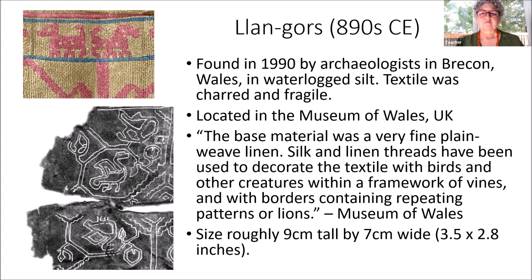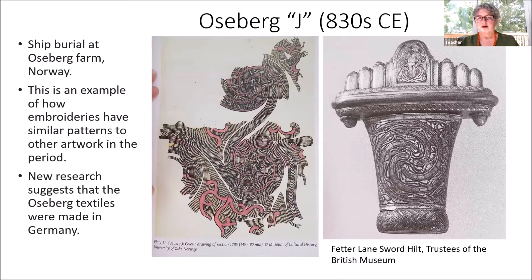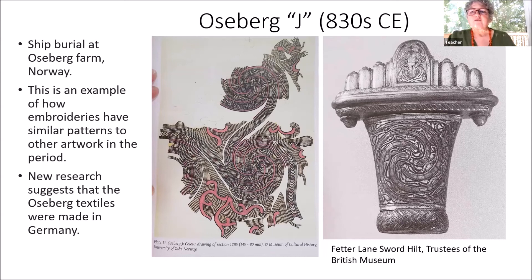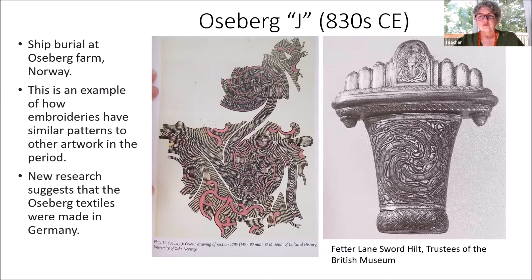The Osberg burial — this is from Norway. This is an example of how embroideries have similar patterns to other artwork in period. We have the drawing of Osberg J on the left, and then the Federline sword hilt on the right, and you can see the pattern is very, very similar. So if you're going to argue about using sword hilts as inspiration for your embroidery, this is a pretty valid argument. New research suggests the Osberg textiles were actually made in Germany — the jury's still out on that.